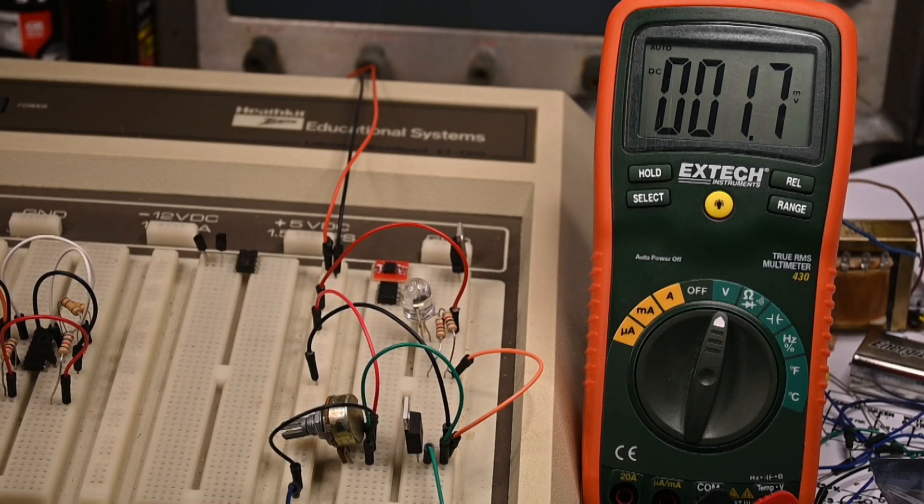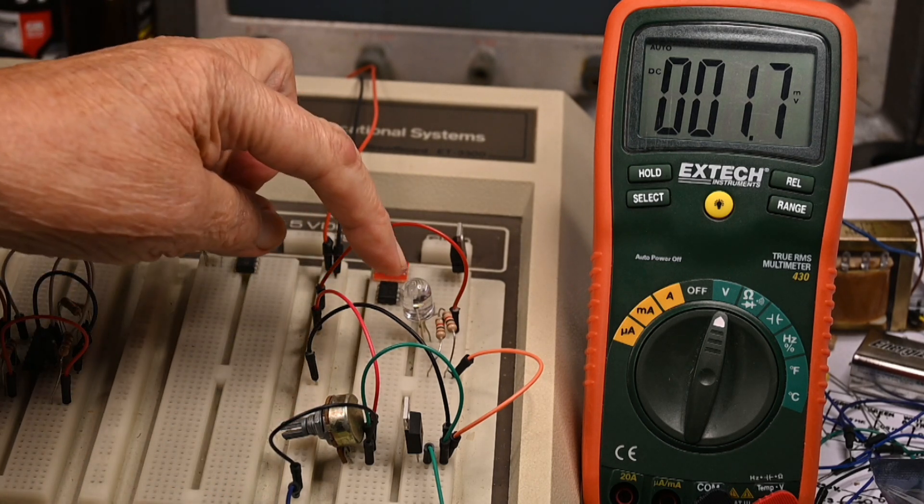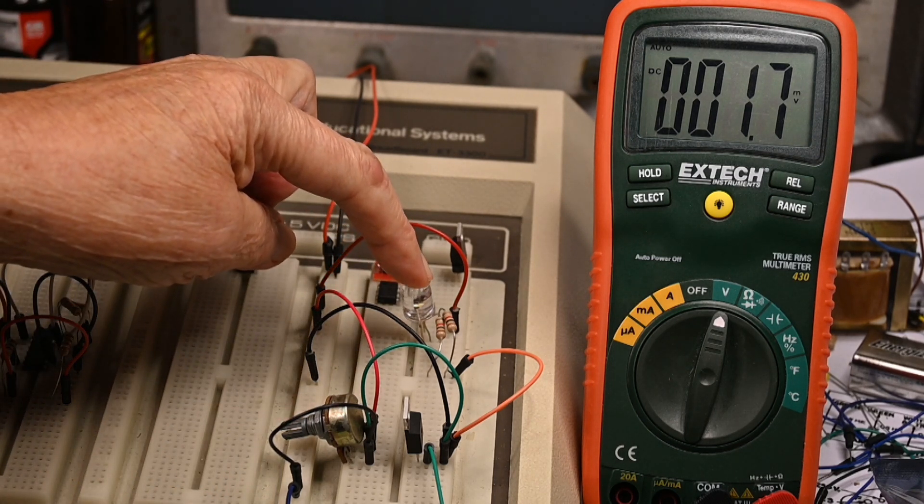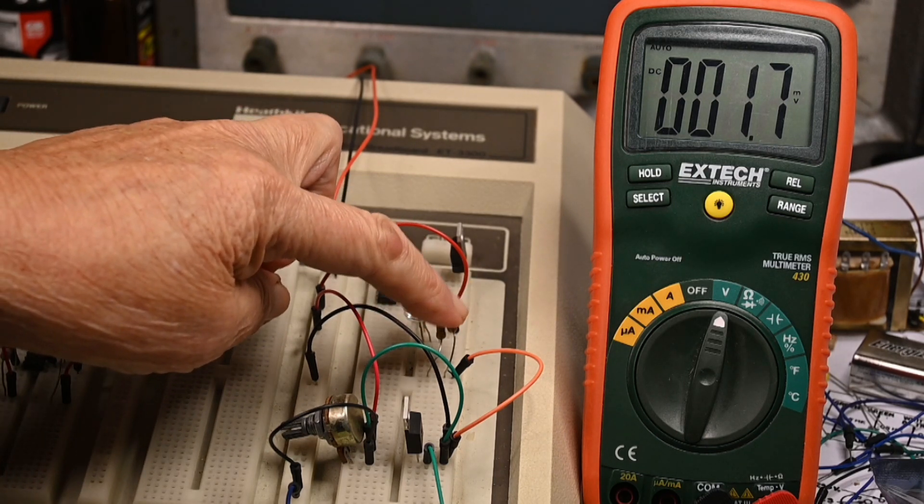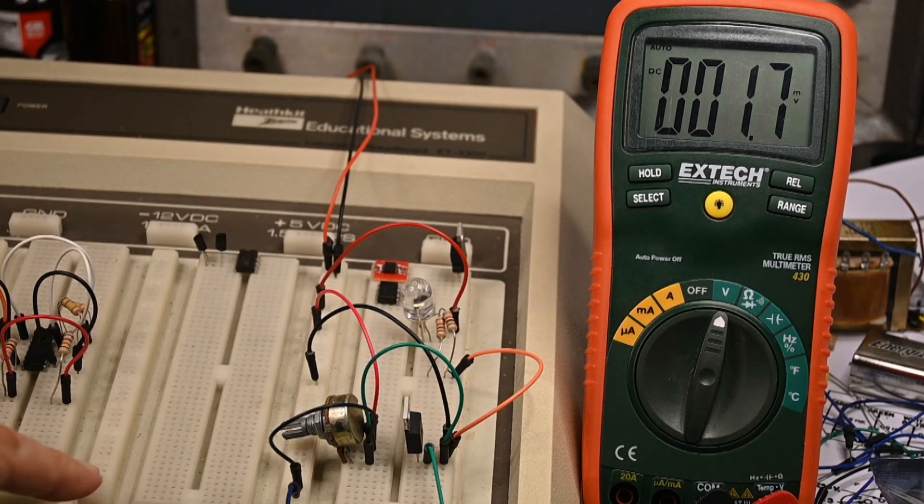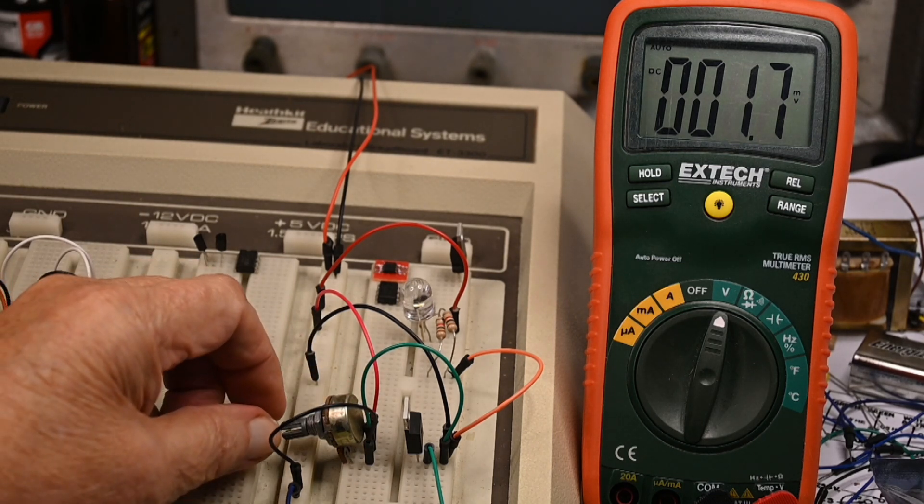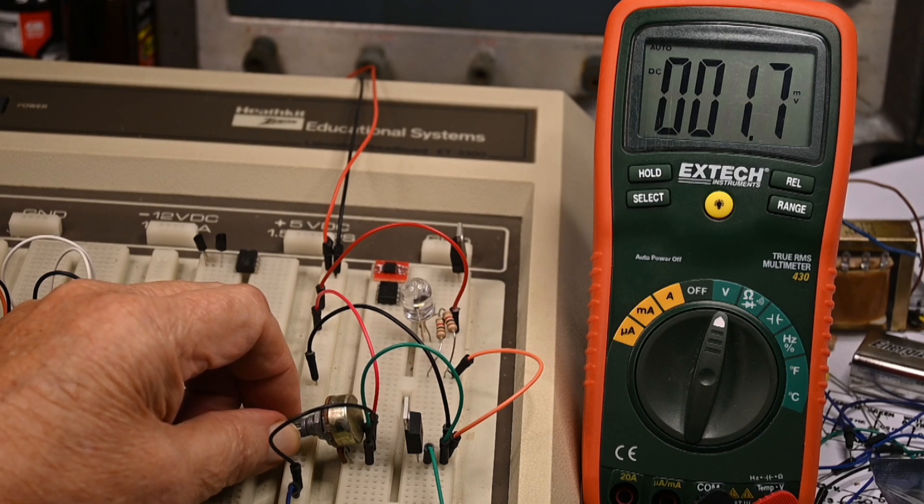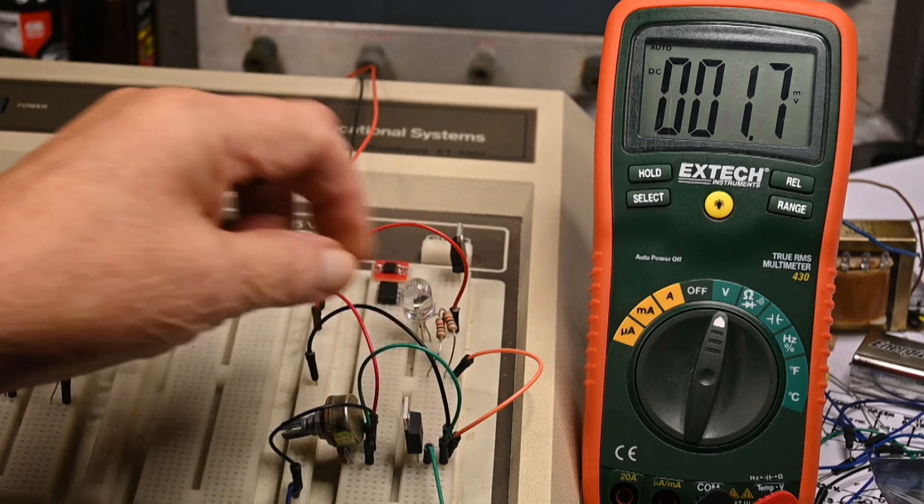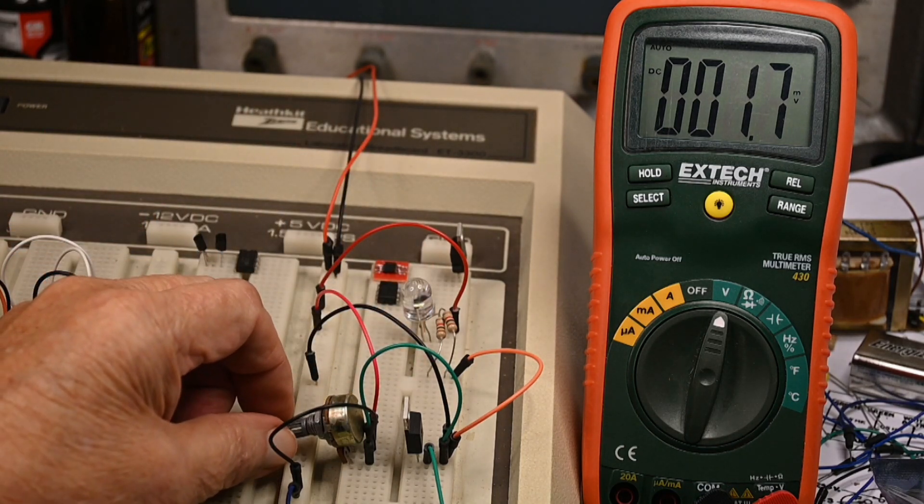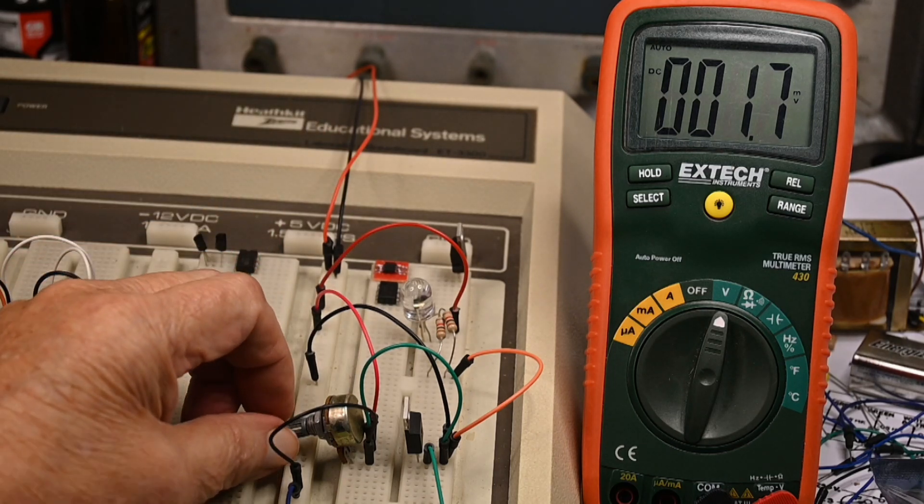I have 12 volts hooked up to this circuit. Here's the LED up here. 500 ohm resistors to 1k in parallel. This is a 50k variable. I'm going to turn this up slowly, varying the gate voltage, and see when this LED first starts to light.